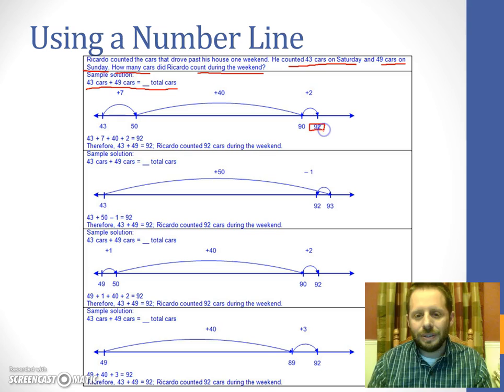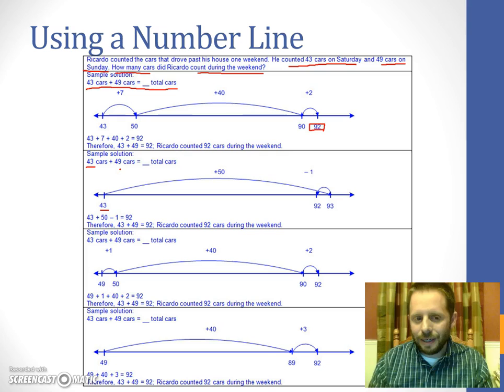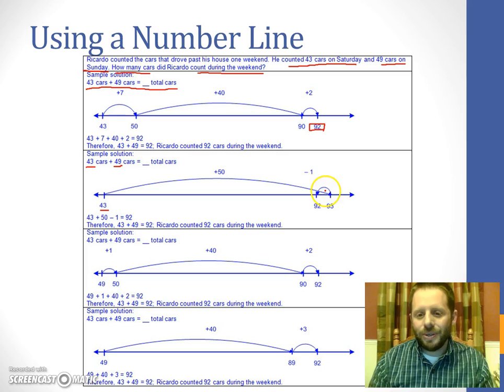Here's another way to do that same problem. Here's the original 43 that we started with. Now this time, instead of breaking apart the 49, I'm going to say, well, 49 is almost 50. And I can add 50 real easy to 43. 50 plus 43 is 93. So I'm going to jump a distance of 50. But the problem is, I only had 49 cars, so I can't go the full 50. So I need to actually back up one, because I've gone one past what I really have. So I subtract one from that, and I can see that my total is 92.